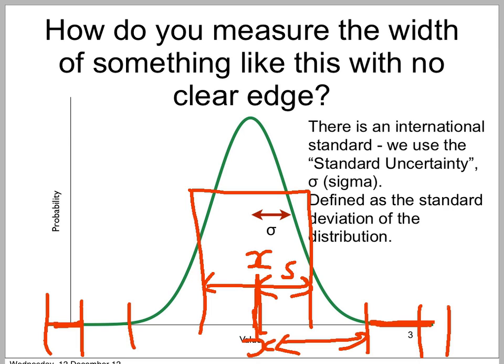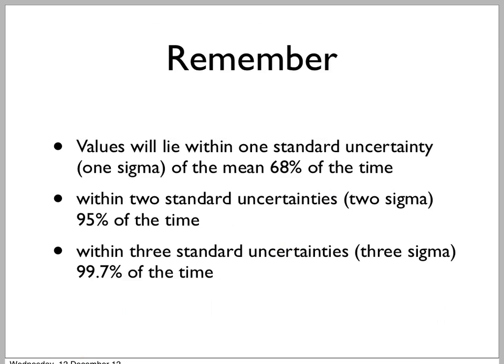Luckily, there is a standard. The standard uncertainty, sigma — which is the same sigma we saw in the equation earlier — is defined as the standard deviation of the distribution. That is actually an International Standards Authority standard for describing uncertainty. So in this course, and in many other courses as well, and much in the real world, if you want to describe an uncertainty, you should use the standard deviation.